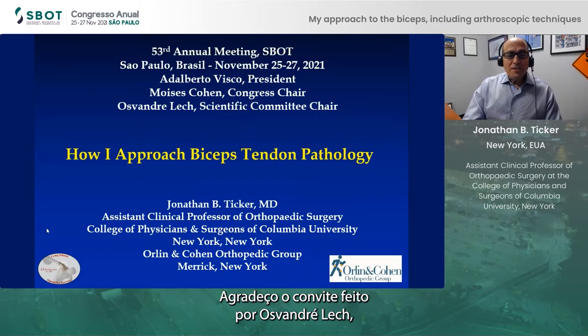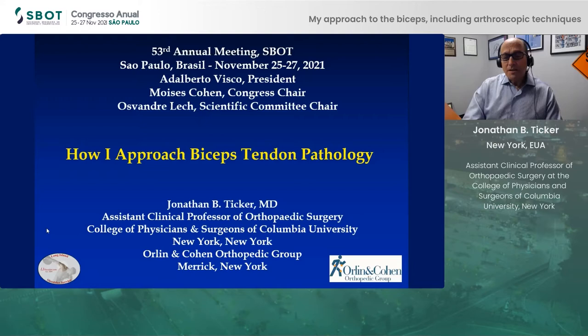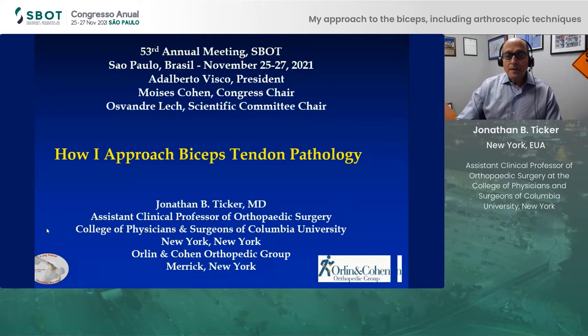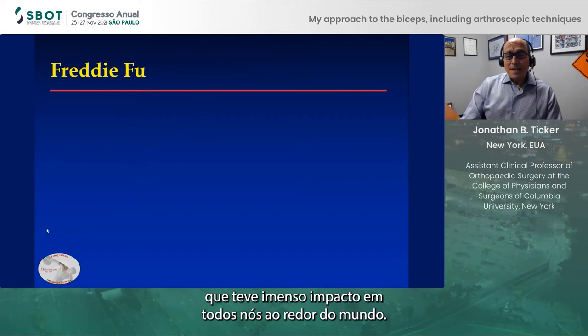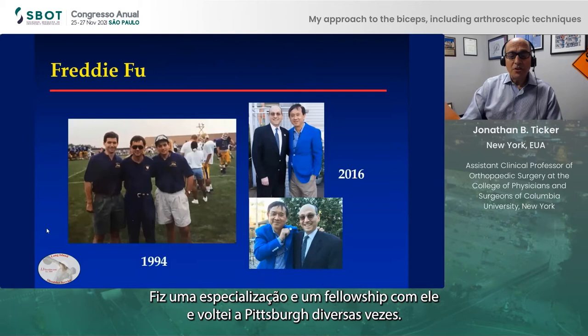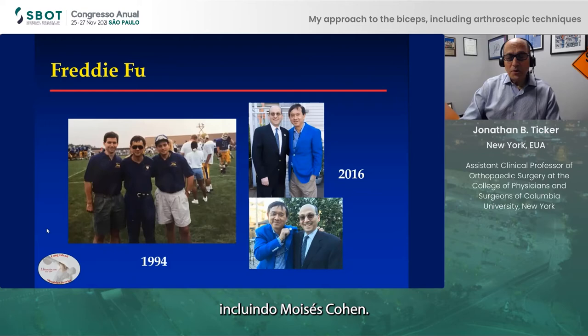Hello. It's an honor to speak at the annual meeting. I appreciate the initial invitation from Maz van der Lech and the committee allowing me to participate. This talk is on how I approach biceps tendon pathology. I want to take a brief moment to talk about Freddie Fu, who has had an impact on all of us around the world. I did a fellowship with him and have been back to Pitt a number of times, and one of his legacies is the friendships he's allowed, including my meeting Moises Cohen.